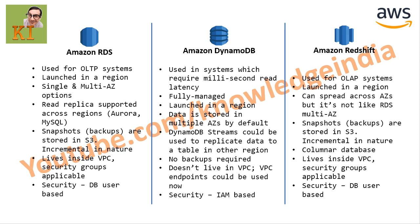The scope of RDS is a region - whichever region you choose, you create your RDS instance there. When creating an RDS instance, you can choose between single-AZ or multi-AZ. Single-AZ means one instance in one availability zone, which is prone to failure if that AZ goes down. For production scenarios it's recommended to use multi-AZ, where two instances run in two different availability zones within the region.